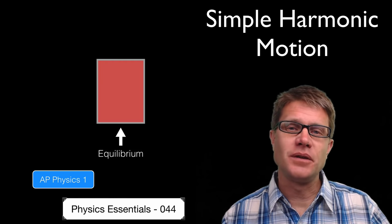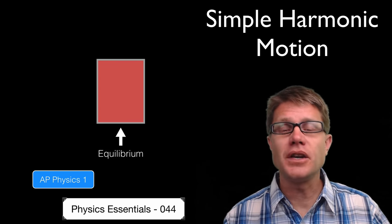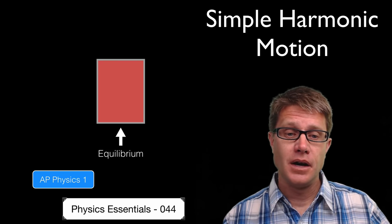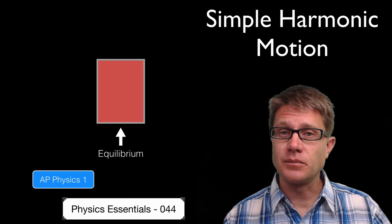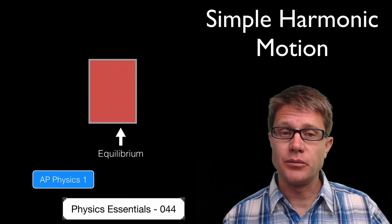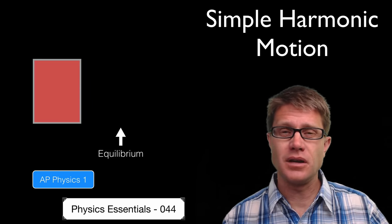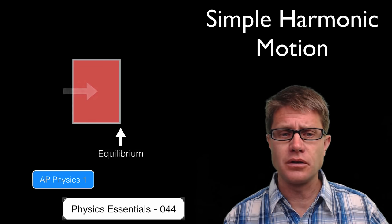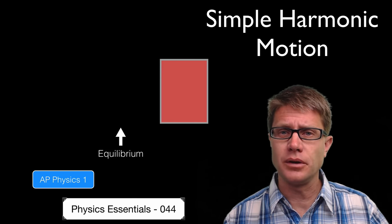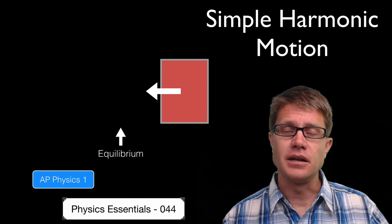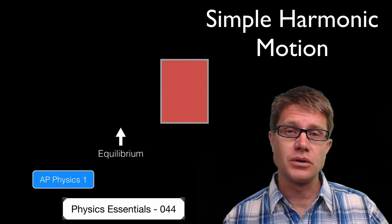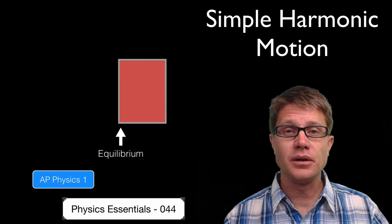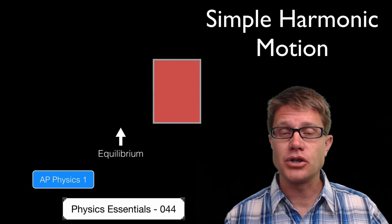Hi. It's Mr. Andersen and this is AP Physics Essentials video 44. It's on simple harmonic motion. Imagine we take an object that is in equilibrium and we push on it, but it doesn't just move away. There is a restoring force that returns it towards equilibrium, and another restoring force that returns it towards equilibrium. And so what we get is this simple harmonic motion.